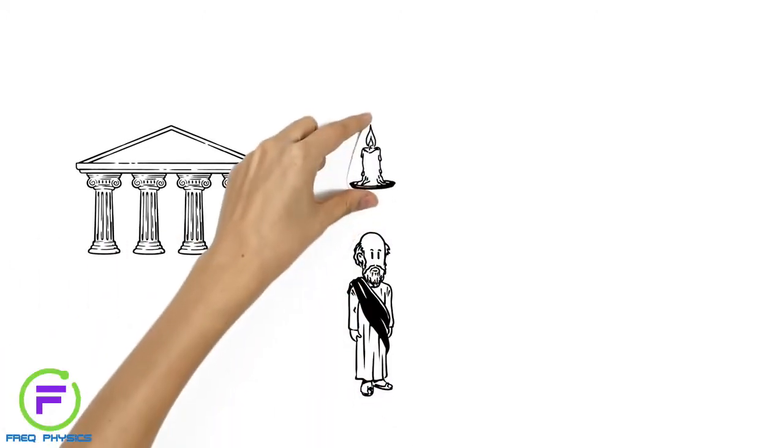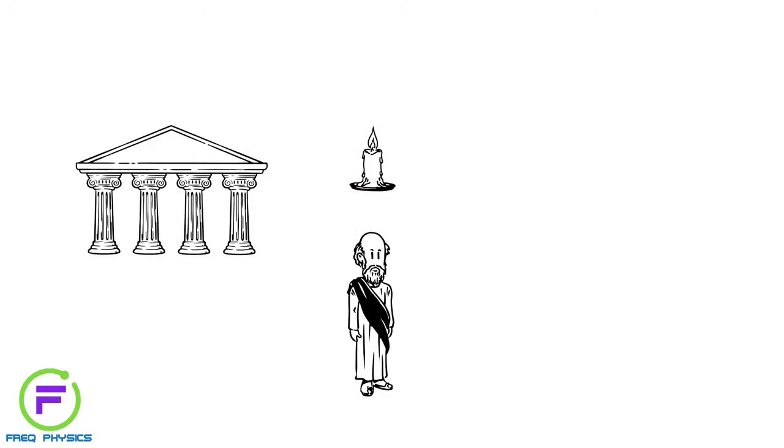Over 2000 years ago in ancient Greece, the mathematician Archimedes came up with an explanation so good it eventually became known as the Archimedes principle.